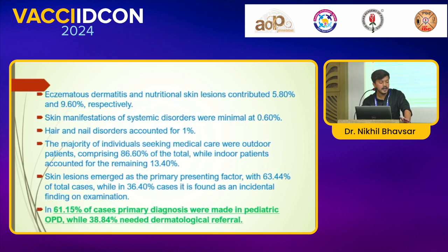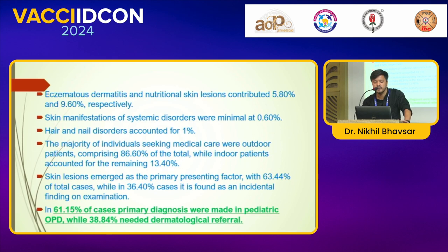Eczematous dermatitis and nutritional skin disorders contributed 5.80% and 9.60% respectively. Skin manifestations of systemic disorders were minimal at 0.60%. Hair and nail disorders accounted for 1.60%. The majority of patients were outpatients comprising 86.60%, while inpatients were 13.40%. Skin lesion was the primary presenting factor in 16.40% of cases, while in 36.40% of cases it was an incidental finding.